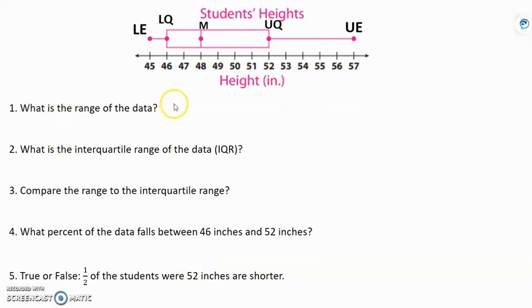What is the range of the data? That's the upper extreme minus the lower extreme. So that's going to be 57 inches minus 45 inches, which is 12 inches.